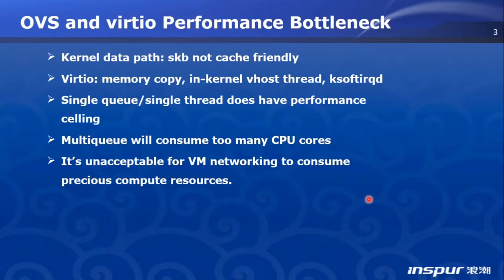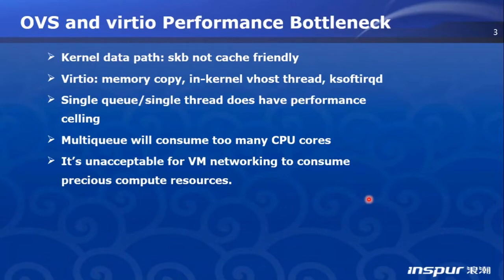OVS uses the vhost interface and VirtIO interface spec to communicate with the virtual machine. VirtIO is a memory-copy-based virtual input/output standard. The Linux kernel threads VHOST and KSOFTIRQD do packet receive and transmit. Basically, one RX/TX queue corresponds to a VHOST kernel thread and a KSOFTIRQD thread. These two kernel threads consume CPU resources to handle memory-copy-based receive and transmit.